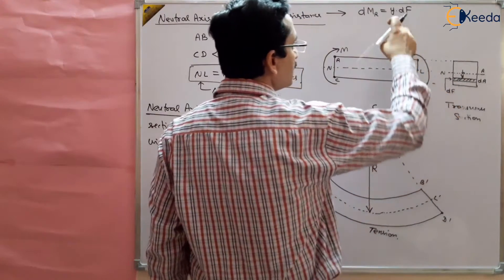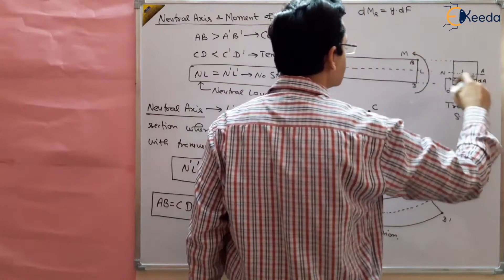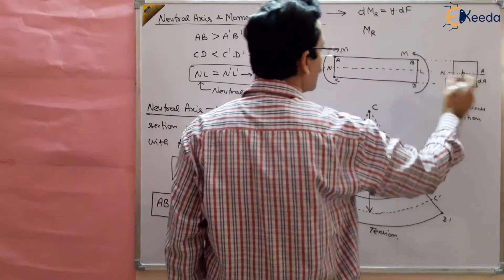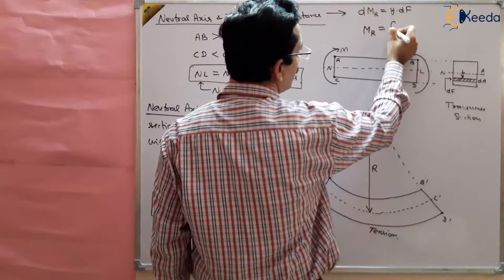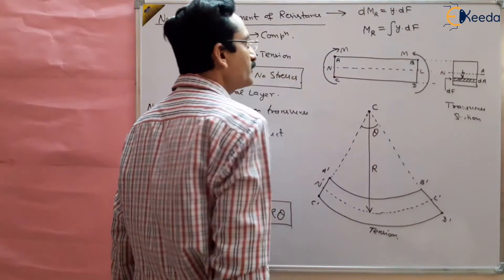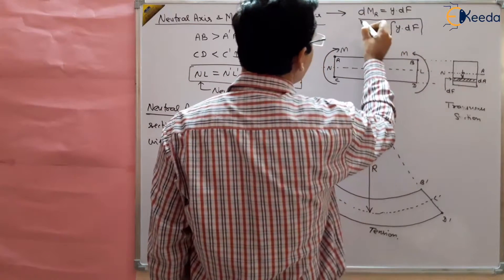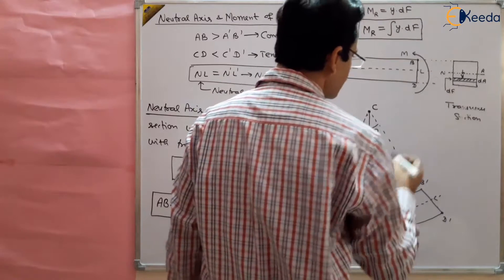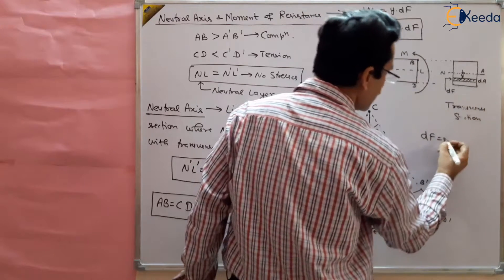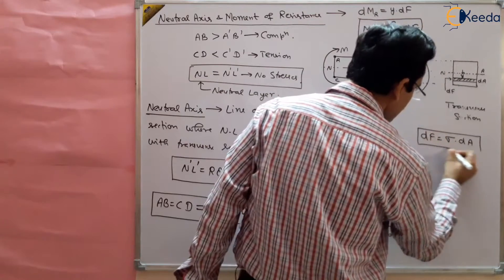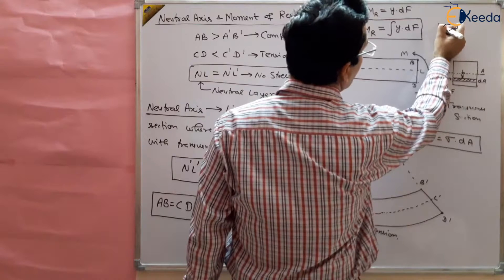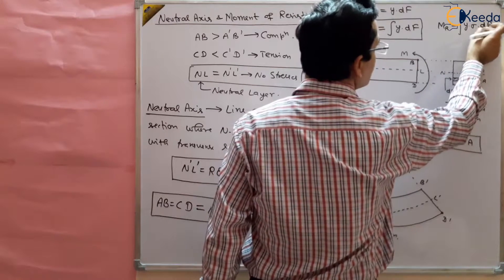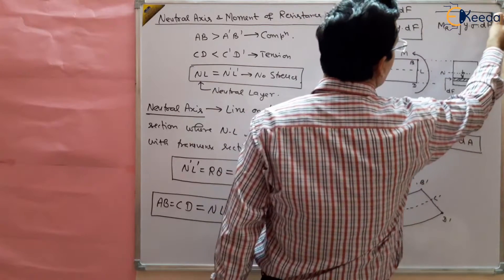The moment will be different for each layer depending on its distance from the neutral axis. The total moment of resistance will be equal to the applied moment, which equals the integration of y·dF. Since force dF equals stress multiplied by area — that is σ·dA — the moment of resistance can be written as the integration of y·σ·dA.